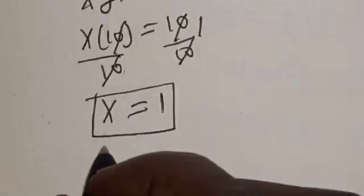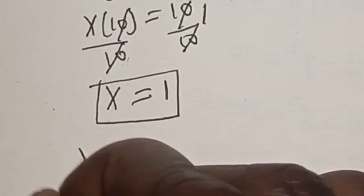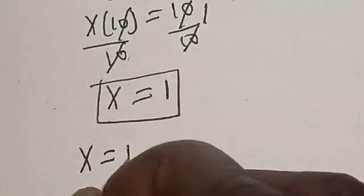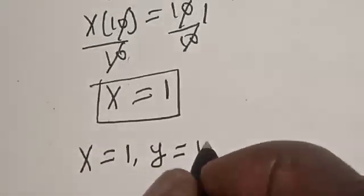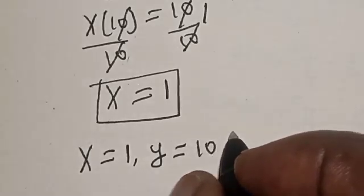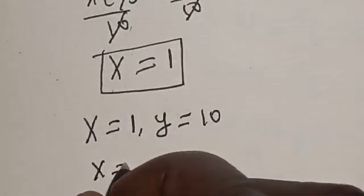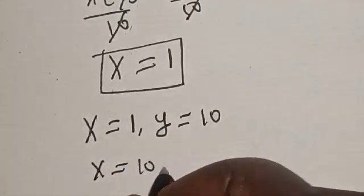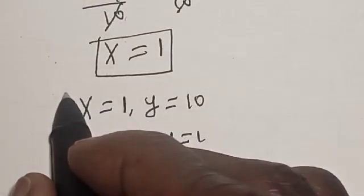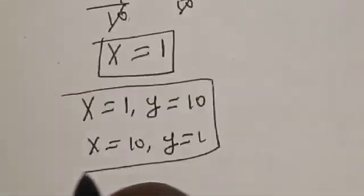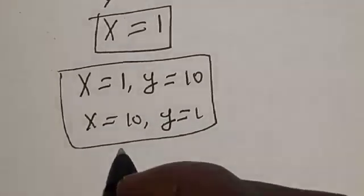Now, our final answers are: x is equal to 1, y is equal to 10, and x is equal to 10, y is equal to 1. That is our final answer. We can check to confirm if our answer is right or wrong.